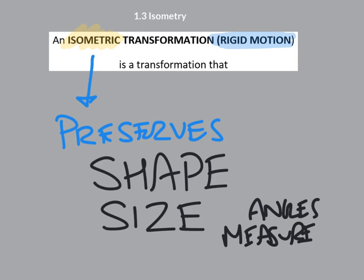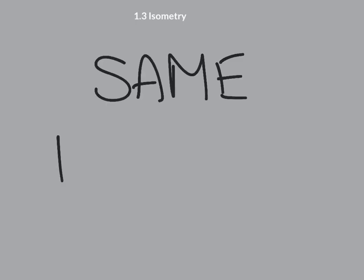So words that might be replaced for isometric might be something like the same, right? Same. Identical.